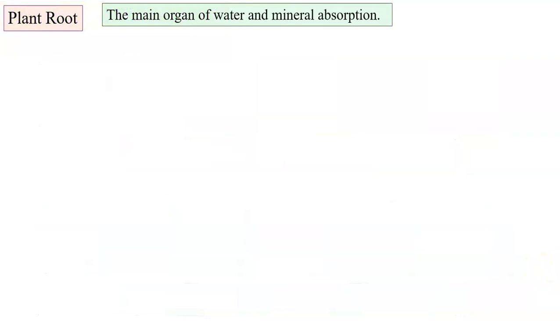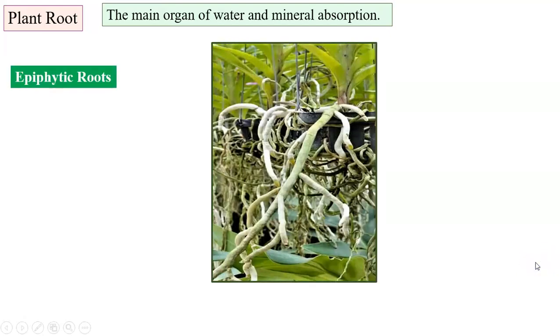The plant root. Root is the main organ of water and mineral absorption for plants. The epiphytic plants are those which have green leaves. They are autotrophic but they grow on the branches of bigger trees.